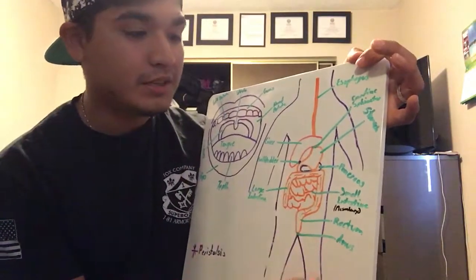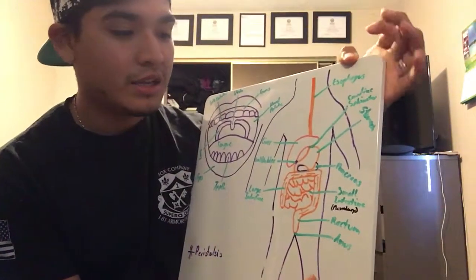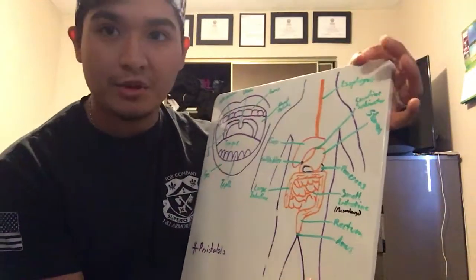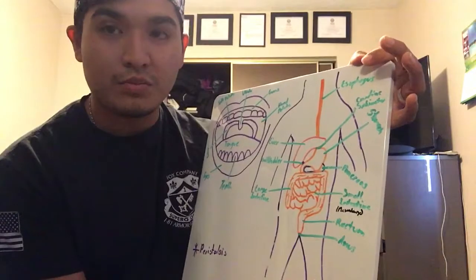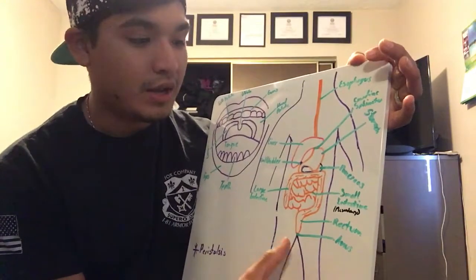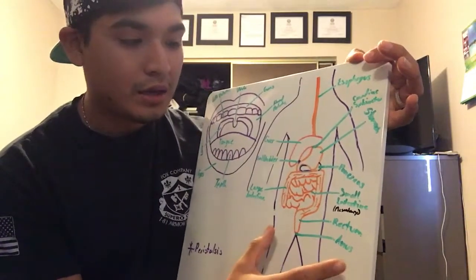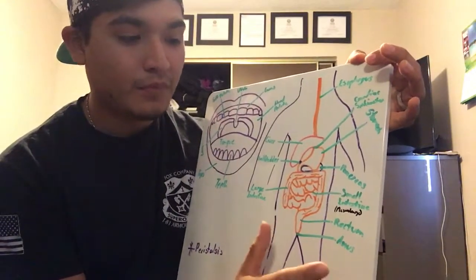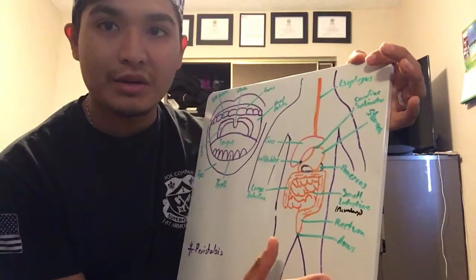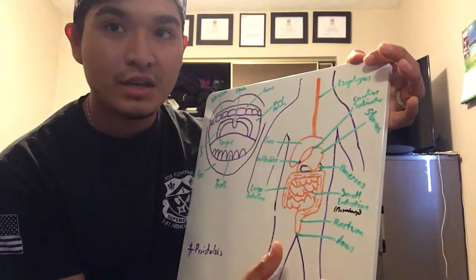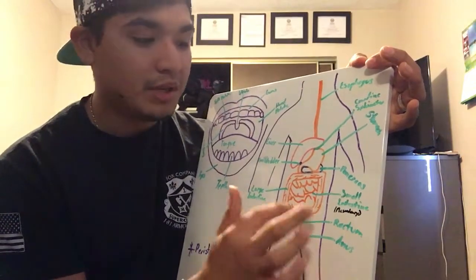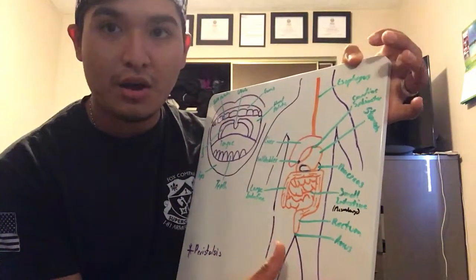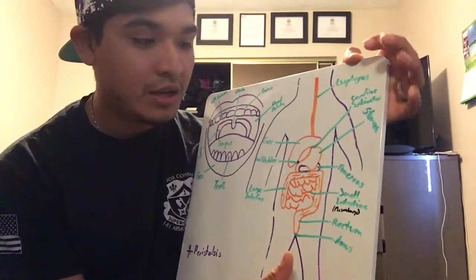The small intestine secretes chemicals to break down food and carries the nutrients away in the bloodstream, and that is called absorption.